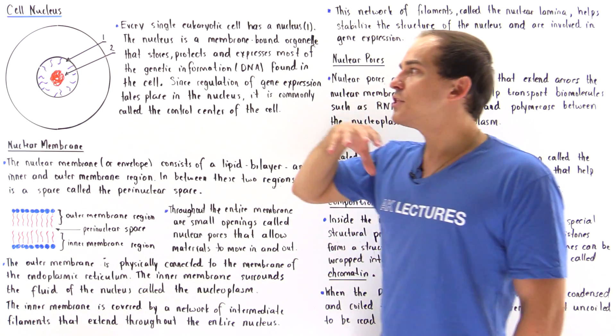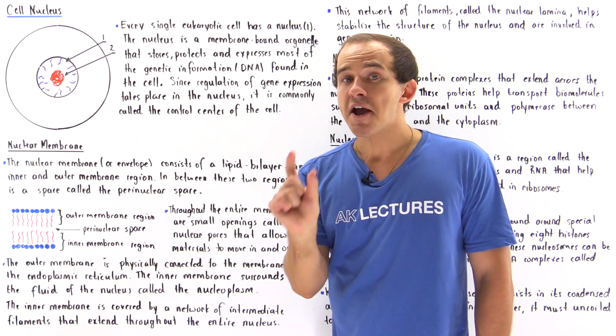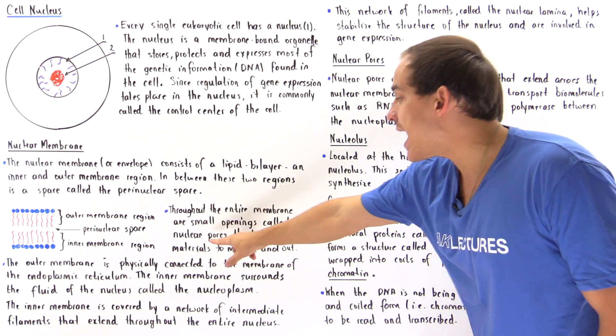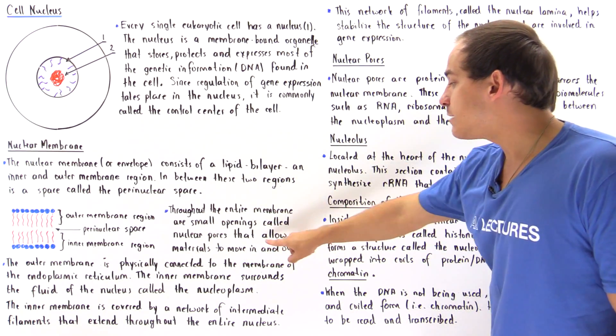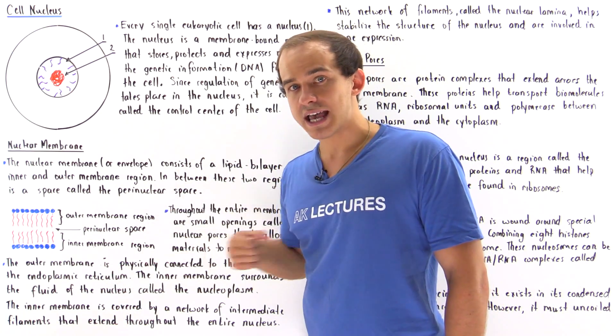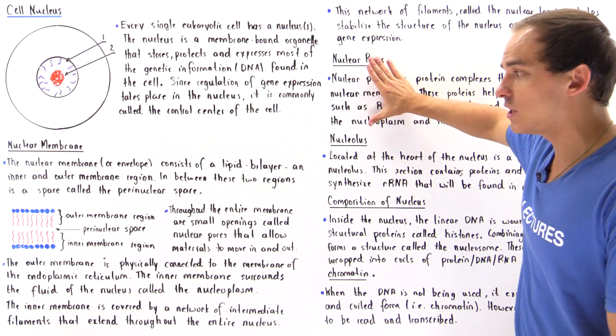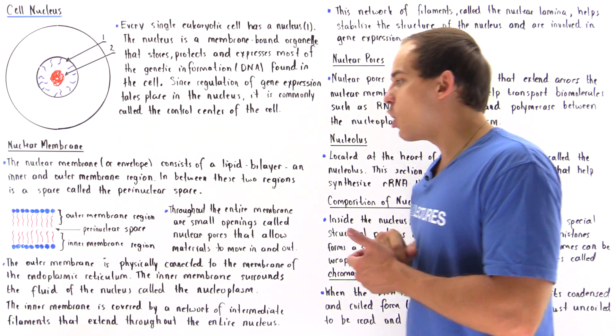Throughout the entire nuclear envelope, throughout the entire nuclear membrane, we have very tiny holes known as nuclear pores that basically allow materials to move into the nucleus as well as outside the nucleus.